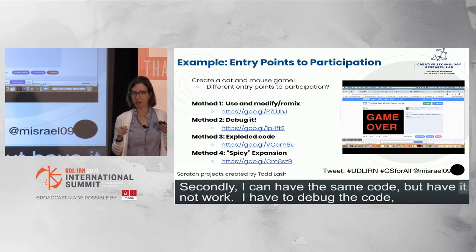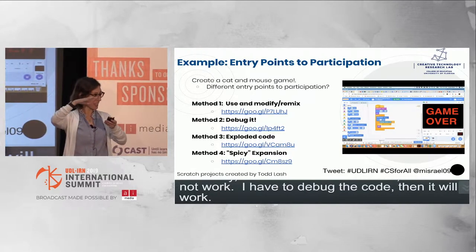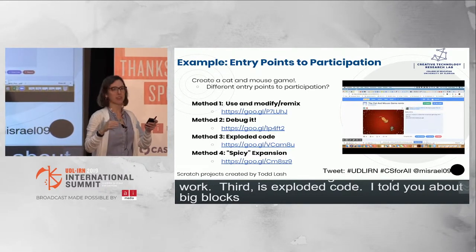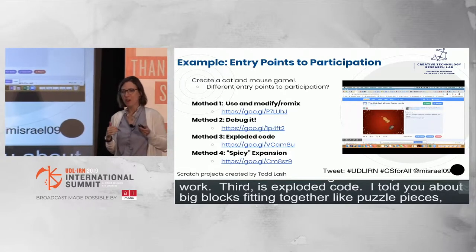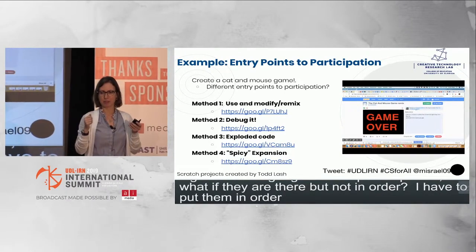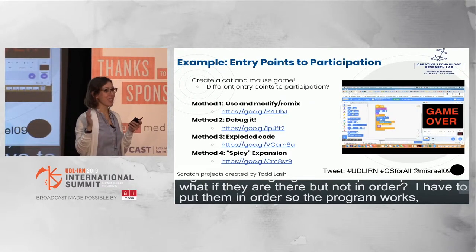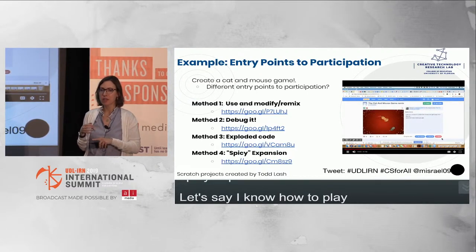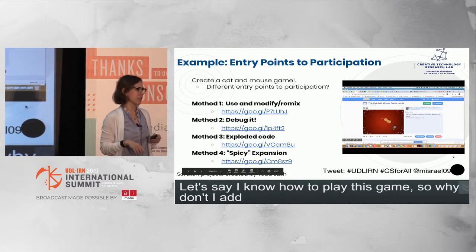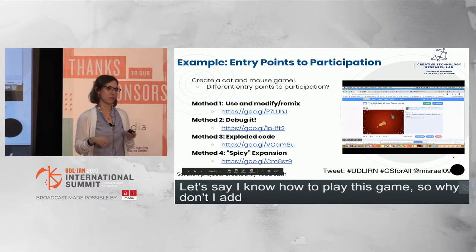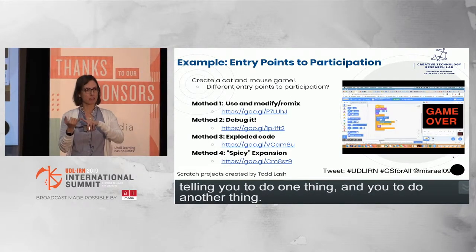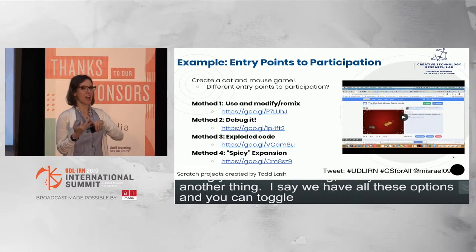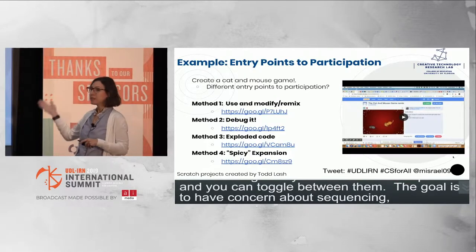Option three is what we call exploded code — all the puzzle pieces are there but not in order, so students have to arrange them correctly. Option four — a friend of mine coined this term — is a 'spicy expansion': if you already know how to play this game, add additional features like scoring. The idea is not to tell one student to do one thing and another something different. We offer all these options and students can toggle between them, because the goal is for kids to learn sequencing, conditional logic, and decomposition.